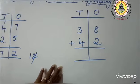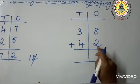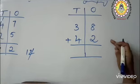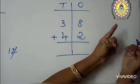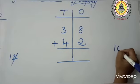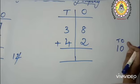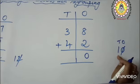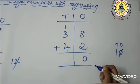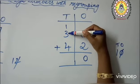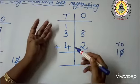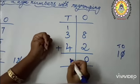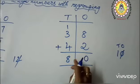Let us do one more sum children. 38 plus 42. Let us start from 1's place: 8 plus 2 — keep 8 in your mind and take out 2 fingers: 8 after 9 and 10. Here also we got 10 — 2 digits. In 1's place there is 0, so write 0 here, and in 10's place there is 1. Now 1 plus 3 is equal to 4 — keep 4 in your mind and take out 4 fingers: 4 after 5, 6, 7, and 8. 38 plus 42 is equal to 80.